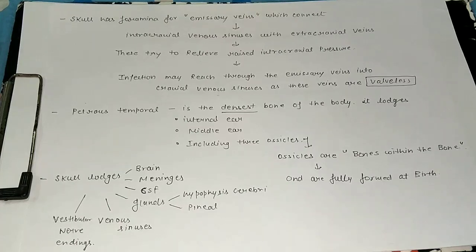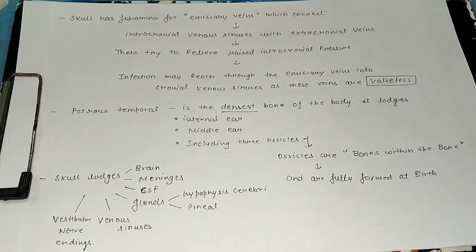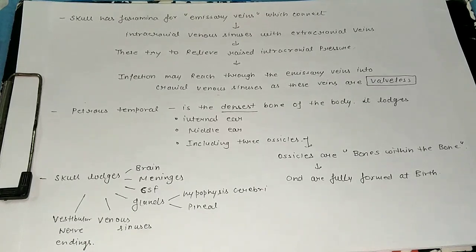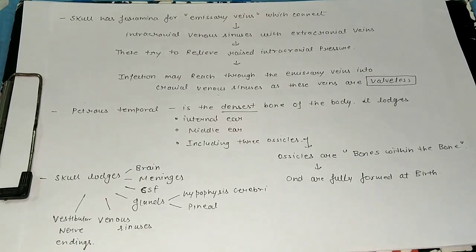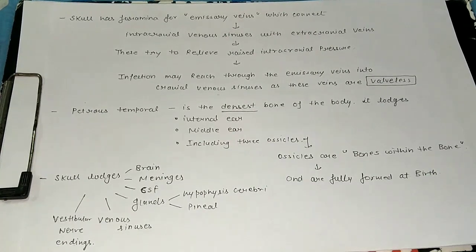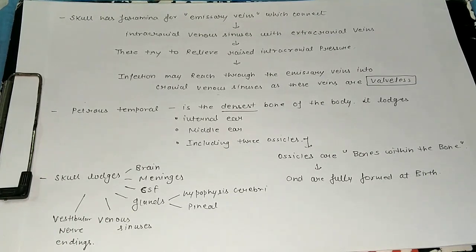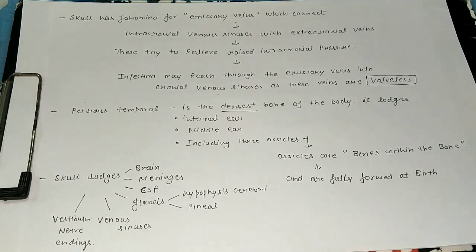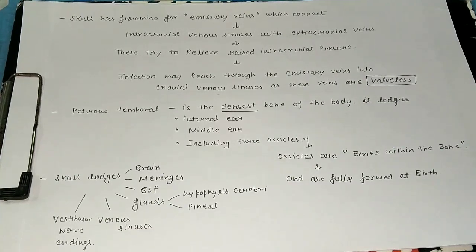Infection may reach through the imagery veins into cranial venous sinus, as these veins are valveless. We have learned that veins normally have valves. Why are they valved? Because arteries carry blood from the heart outward, so gravity helps blood flow to all organs through arteries. But veins carry blood from lower extremities or the head back to the heart. If we talk about gravity, blood needs to go upward through veins against gravity. If we don't have valves in the veins, then blood will not go up but will fall down. So all veins are valved, but the imagery veins are valveless. Remember this. This is important.